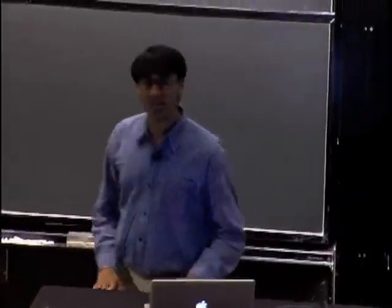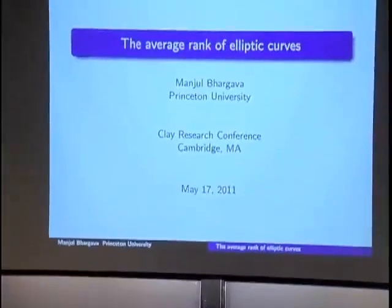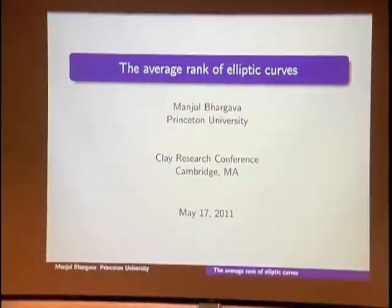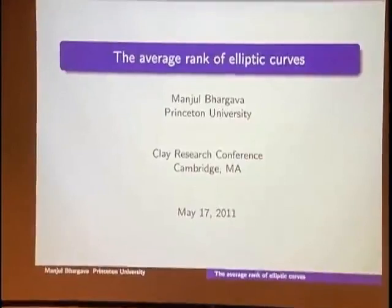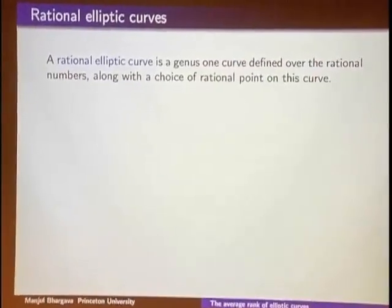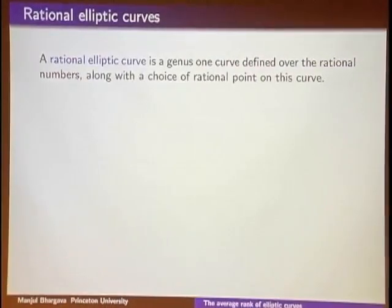What I want to talk about today is the average rank of elliptic curves. I'll begin by defining what each of the words in the title means — the other four words. I'm concerned with rational elliptic curves. A rational elliptic curve is a genus one curve equipped with a rational point — a genus one curve defined over the rational numbers that's equipped with a rational point.